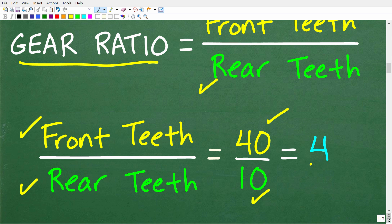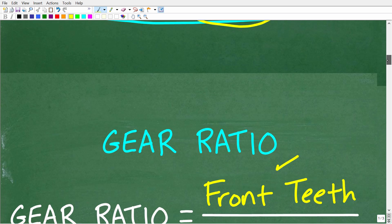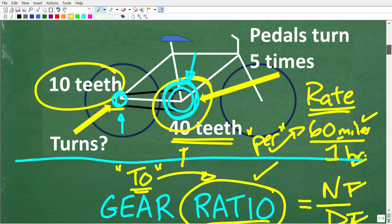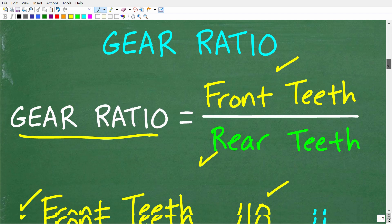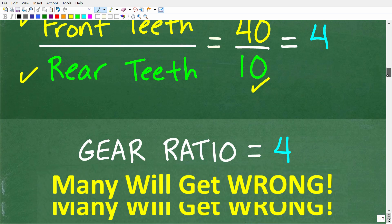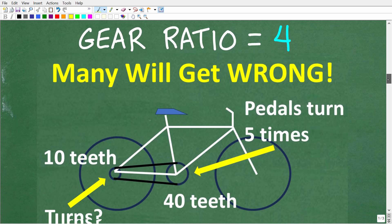So, what does that mean conceptually? Well, what that means is that for every one revolution of the big gear, the small gear back here will turn 4 times. So, now that we understand the gear ratio, solving this problem will be very easy.